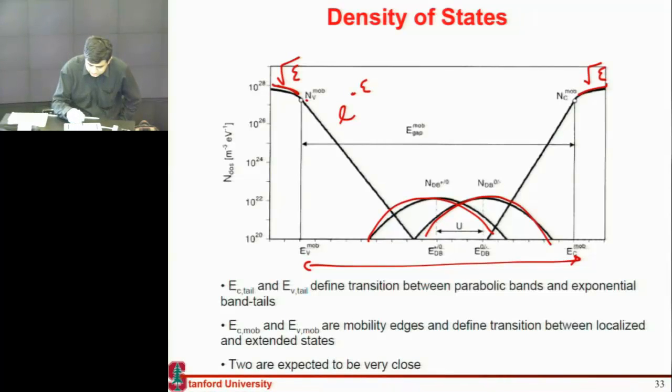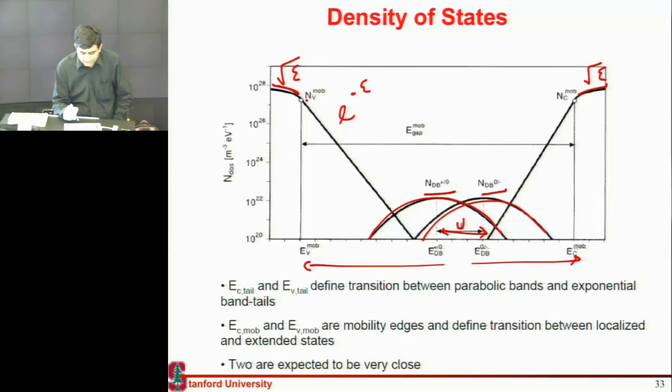These states I just showed you, these two dumbbells over here, these states come due to these dangling bonds. And you can see they are located right in the middle of the band gap. Because you have these coordination defects, they give rise to these dangling states. Other thing you see is that these states, there are two of these dumbbells, and they are separated by this distance U. They are similar-looking distributions. In one case I have labeled them positive and zero. In the other case I have labeled them zero and negative. You can see a very interesting thing that at one energy level, say this energy level, I have two of these states. Usually in a semiconductor at one energy level, you only have one state. But in this case, you have multiple of these states at each energy level. That's another interesting thing.